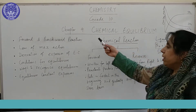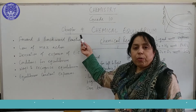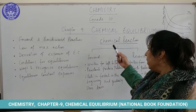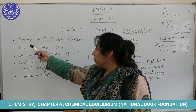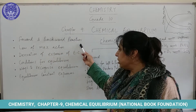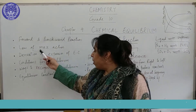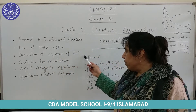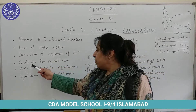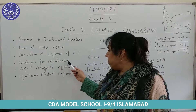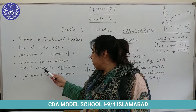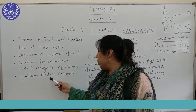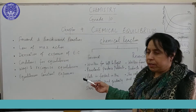So far you have studied 8 chapters and now you are quite familiar with chemistry and chemical reactions. In this chapter we will discuss about the forward and the backward reactions, the law of mass action, derive expressions of equilibrium constant, conditions for equilibrium, ways to recognize equilibrium, and write equilibrium constant expressions for different chemical reactions.